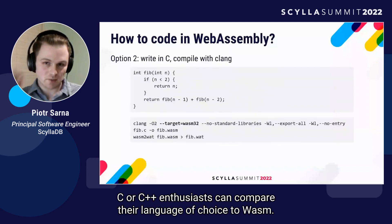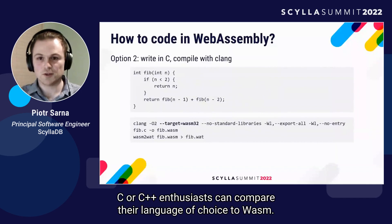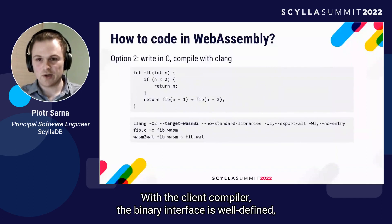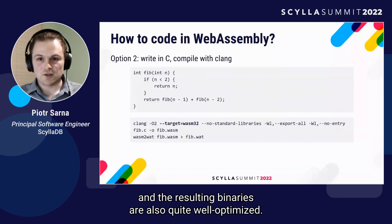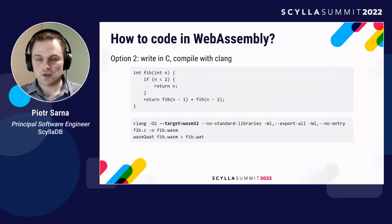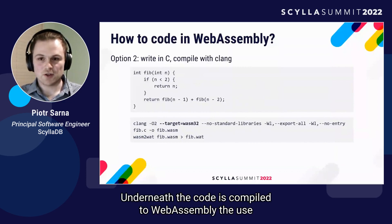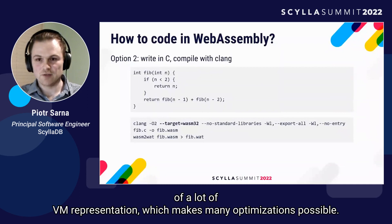C or C++ enthusiasts can compile their language of choice to WASM with the Clang compiler. The binary interface is well defined and the resulting binaries are quite well optimized. The code is compiled to WebAssembly using LLVM's intermediate representation, which makes many optimizations possible.